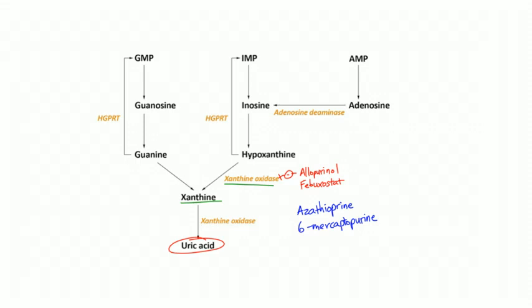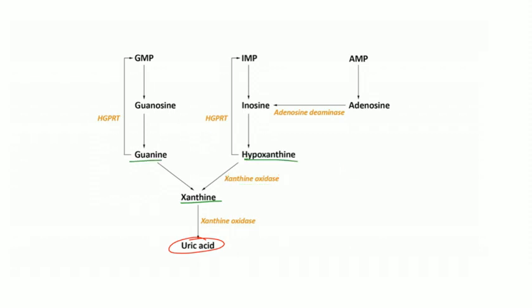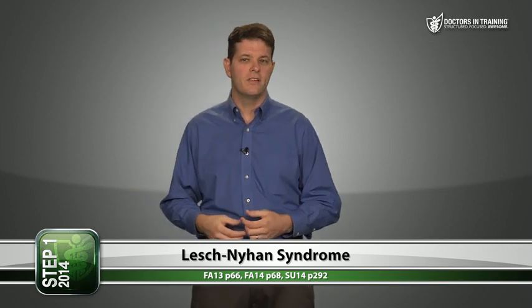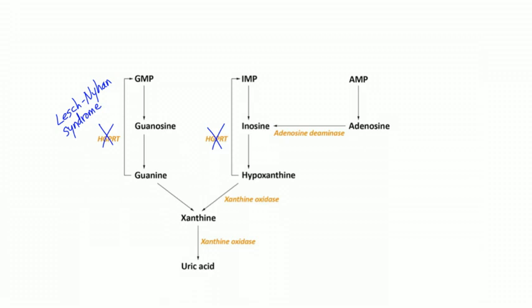Xanthine comes from either guanine or hypoxanthine. There's an enzyme that can recycle guanine back to GMP called HGPRT — hypoxanthine-guanine phosphoribosyl transferase. It transfers a phosphate group and ribosyl sugar onto guanine to make GMP. Similarly, IMP breaks down to inosine to hypoxanthine, and HGPRT can transfer a phosphate and sugar onto hypoxanthine to make IMP.